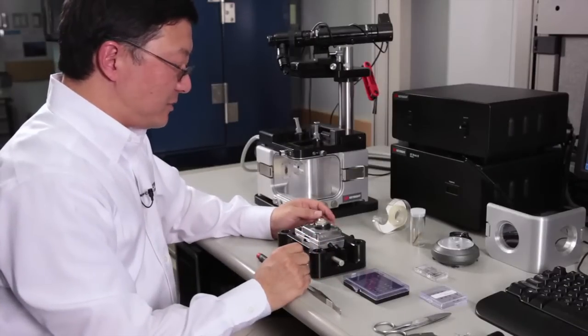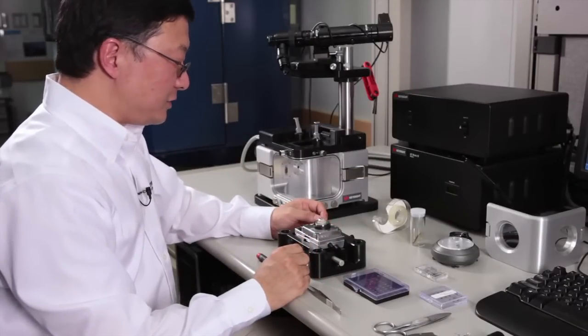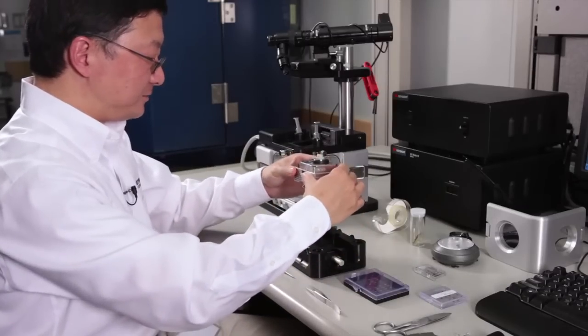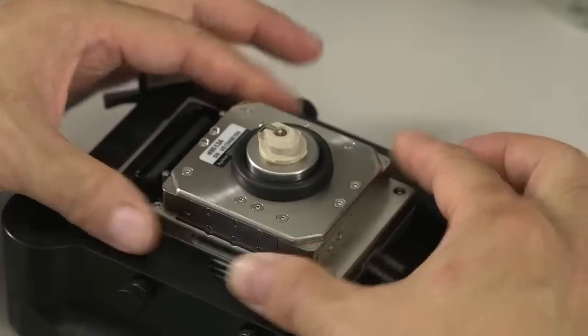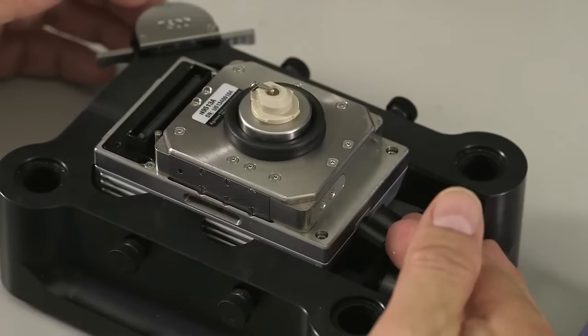Next is to mount the cantilever to your scanner. In order to do so, we need to have the AFM scanner mounted on the scanner station. If you are right-handed, you need to have the adjust knob towards the right-hand side.